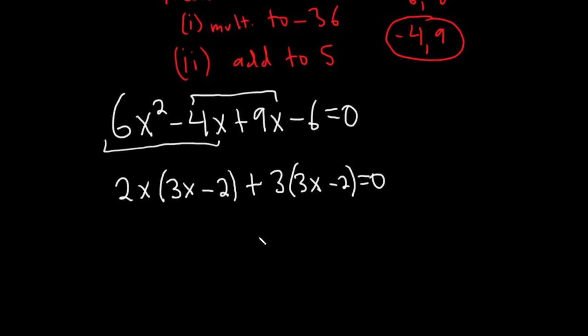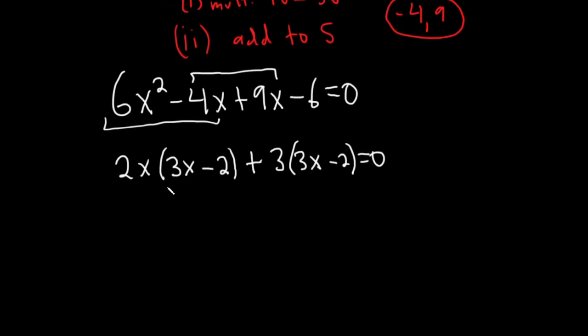And now we can factor by grouping. We take this. And the front will get 2x plus 3. 2x plus 3. And then here we have 3x minus 2. And that's equal to 0. And you can check. 3x minus 2 times 3 is 3x minus 2 times 3. 3x minus 2 times 2x is right here.